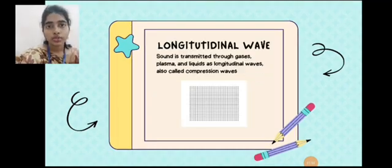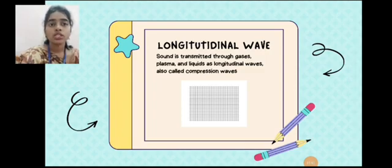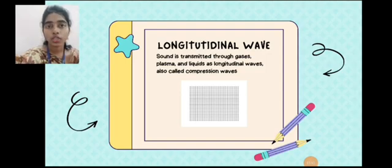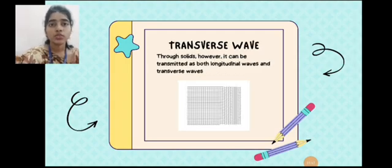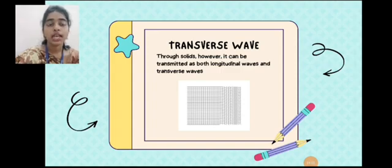Then, the two waves, those are the longitudinal waves and transverse waves. On coming to longitudinal waves, sound is transmitted through gas, plasma, and liquid as longitudinal waves. It is also known as compression waves as it compresses the volume which can be audible to the human ear. Transverse waves are through solids. However, it can be transmitted as both longitudinal waves and transverse waves. In liquid, we see the longitudinal waves, and in solid, we see the transverse waves.